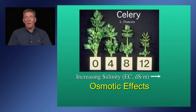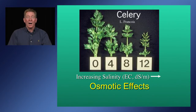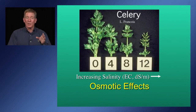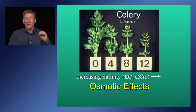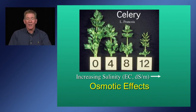Here's a typical picture of celery from a colleague at the US Salinity Laboratory in Riverside, showing a typical osmotic effect. This is celery grown at four different salinities: 0, 4, 8, and 12 deci-siemens per meter. This was done in solution culture with optimal nutrients — no other stress imposed, just an osmotic stress from salts in the solution. As salinity increases, the plants become progressively smaller. Only at the really high concentration of 12 do you get the combination of both osmotic and specific ion toxicity.